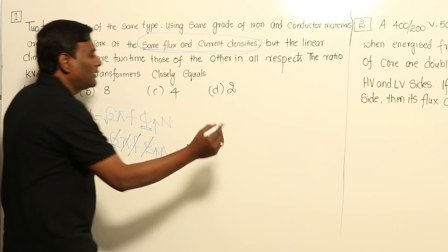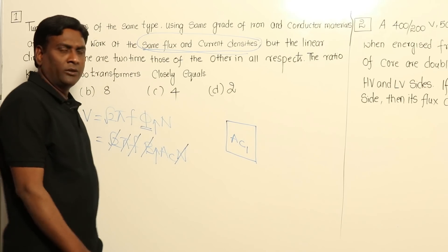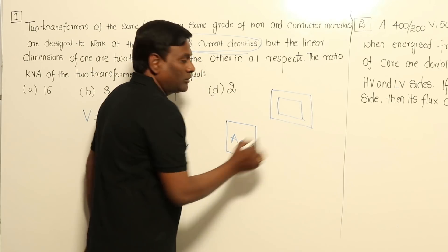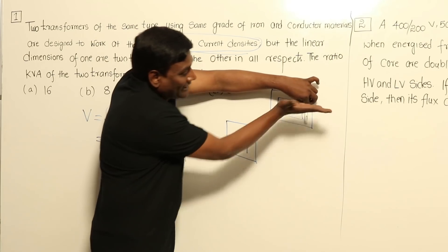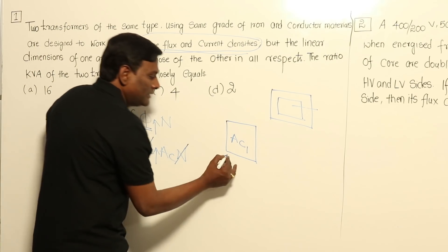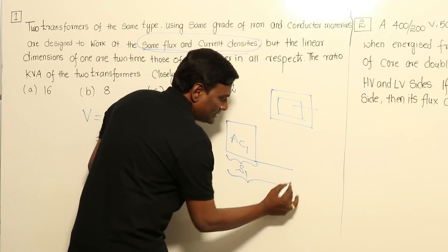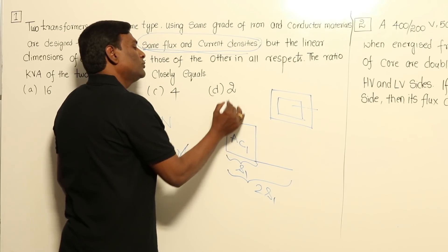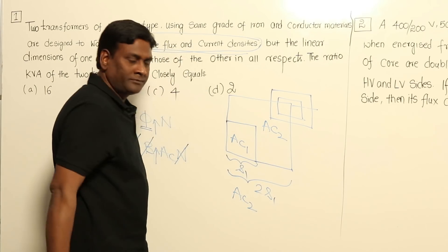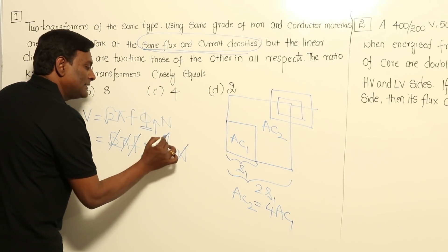If this is the area of cross section of the core in the first case with side S1, and in the second case the linear dimensions are doubled to 2S1, then the area of cross section of the core in the second case is 4 times that of the first case, since area scales as the square of the linear dimension.